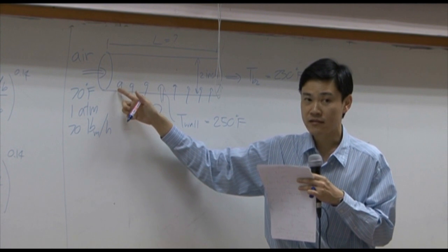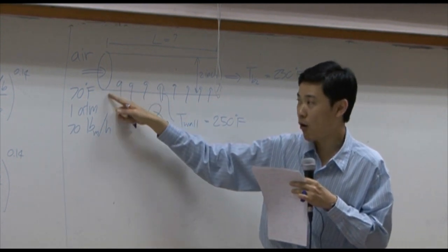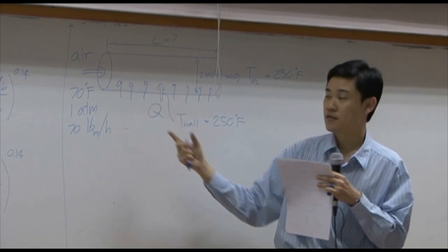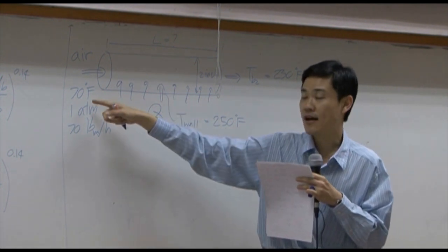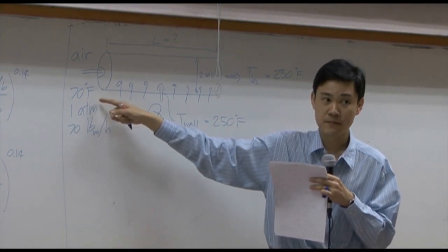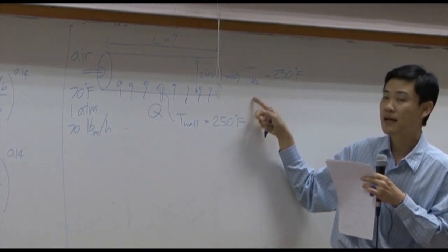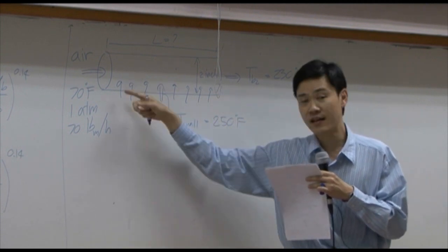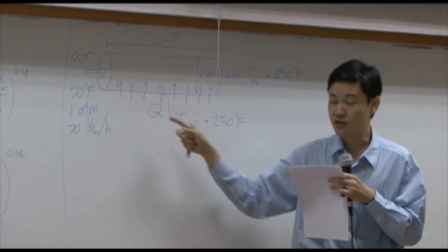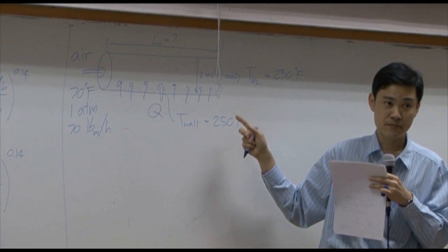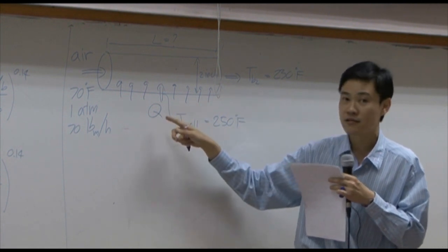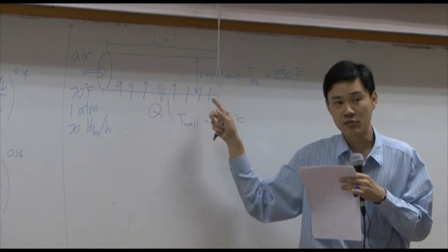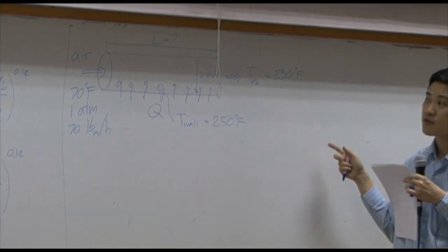At the inlet, the temperature difference between wall and fluid inside is great. You have 250 and 70 degree difference. But around the outlet, the temperature difference will be much lower. Therefore, amount of heat transfer locally in the inlet part will be much higher than the outlet part. Not only do you not know the amount of heat, you do not even know how it's distributed.